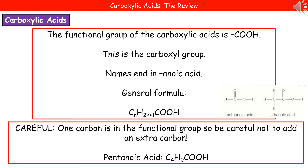In terms of how we draw carboxylic acids as a displayed formula, methanoic and ethanoic acid are shown on the right. When writing the functional group, from the carbon there is one oxygen joined with a double bond and another oxygen joined with a single bond. Be mindful not to miss that double bond, otherwise you'll have the wrong number of hydrogens in your final formula.